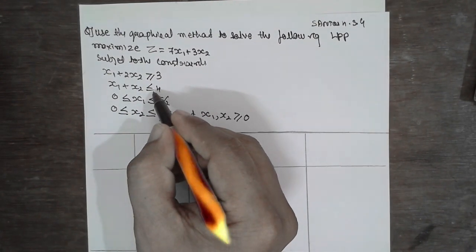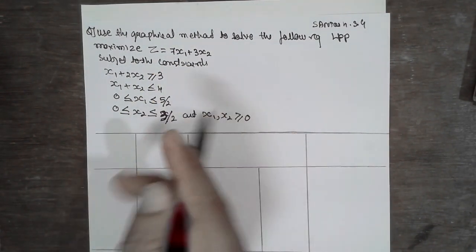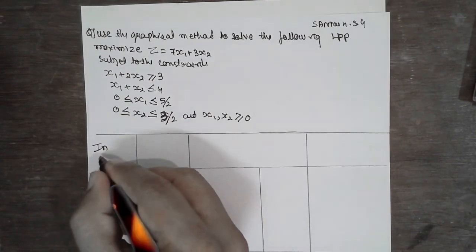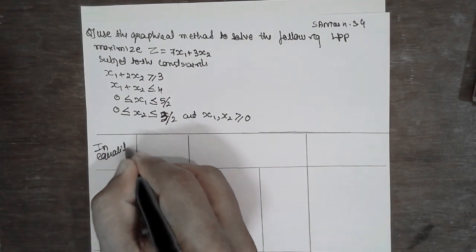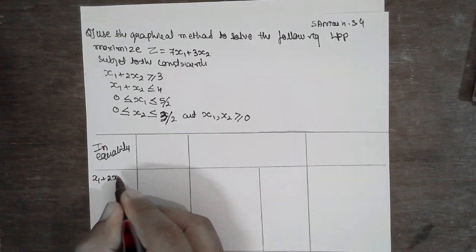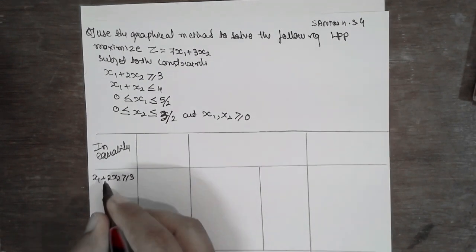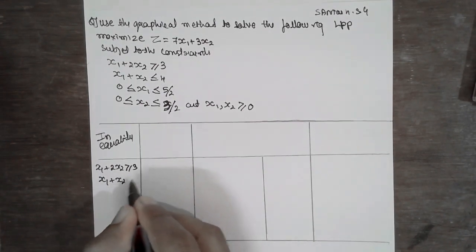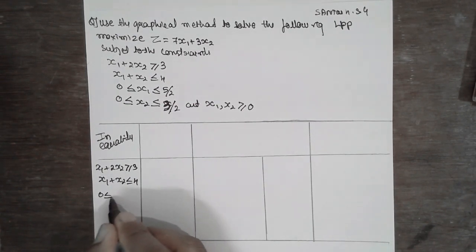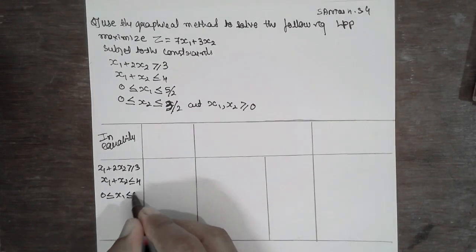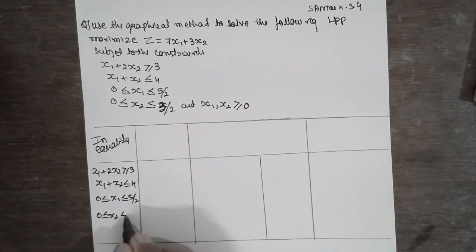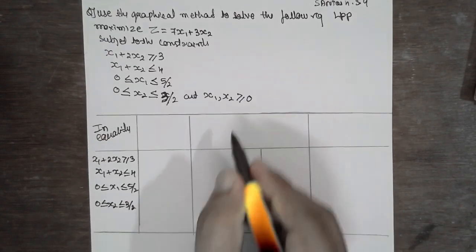Here, greater than and less than signs play an important role. These terms we call as an inequality. Write the inequalities as given: x1 plus 2x2 greater than or equal to 3; x1 plus x2 less than or equal to 4; 0 less than or equal to x1 less than or equal to 5/2; and 0 less than or equal to x2 less than or equal to 3/2.